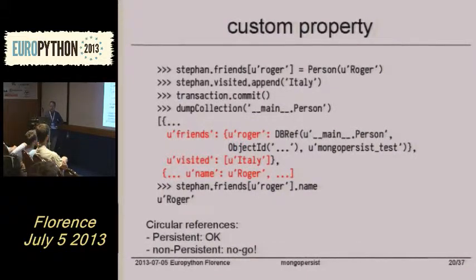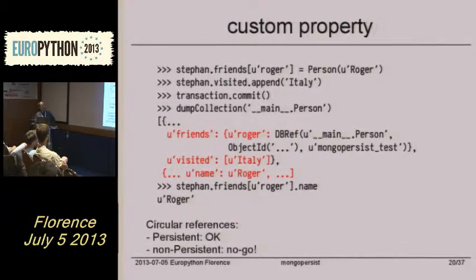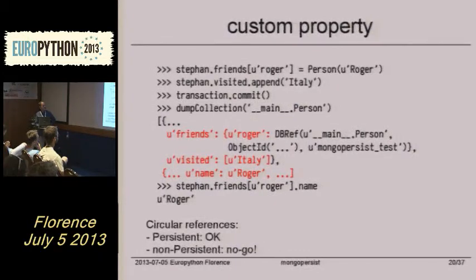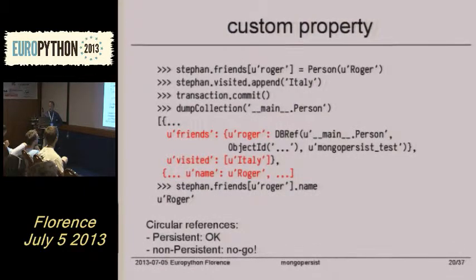So far you are subclassing persistent, because those persistent objects will store database references, which is then very easy to resolve with circular references. But if you are not subclassing persistent, this is a big problem with circular references.